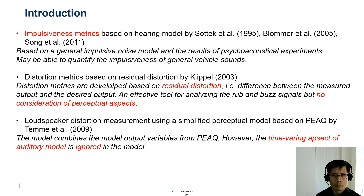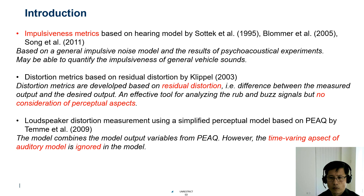Another approach is CLIPL, which has suggested using a residual distortion — the difference between the measured output and the desired output. It's a quite effective way, as the ultimate goal is to compare the ideal signal versus the actual signal. However, this does not take into account perceptual aspects, such as hearing threshold or loudness.